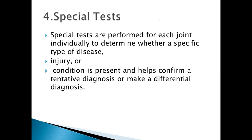Special tests are tests you perform specific to each joint. For example, for a patient with shoulder joint problems, you might perform the empty can test, lift-off test, or apprehension test. For a patient with knee joint pain, you would perform the McMurray's test or Apley's test — noting that Apley's test is a lower limb test for the knee joint.